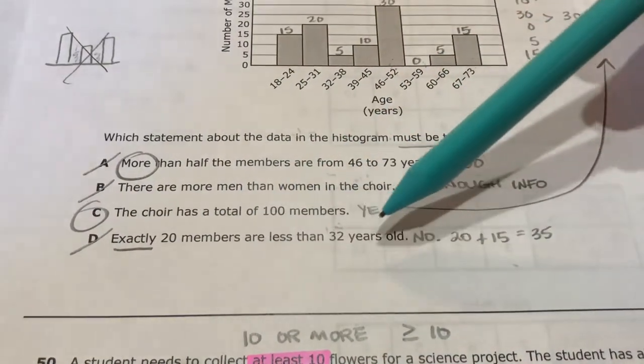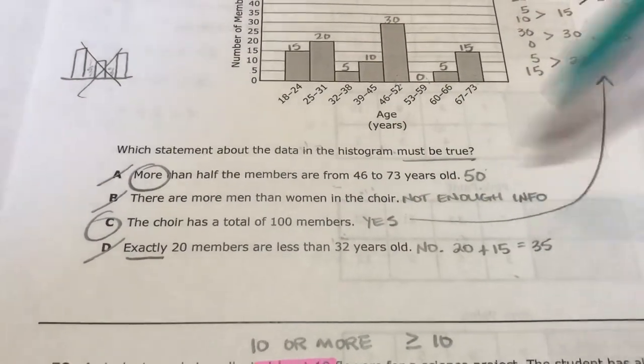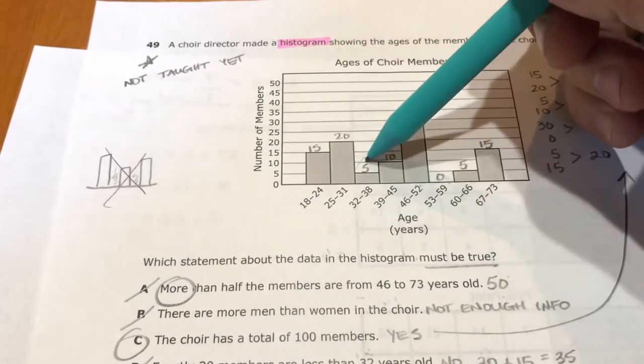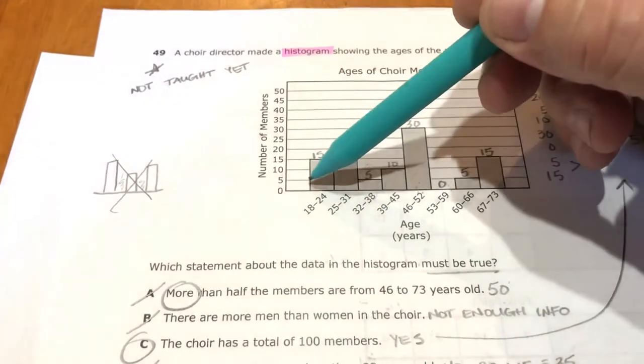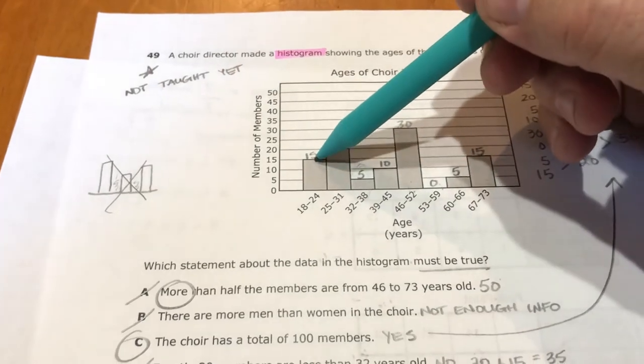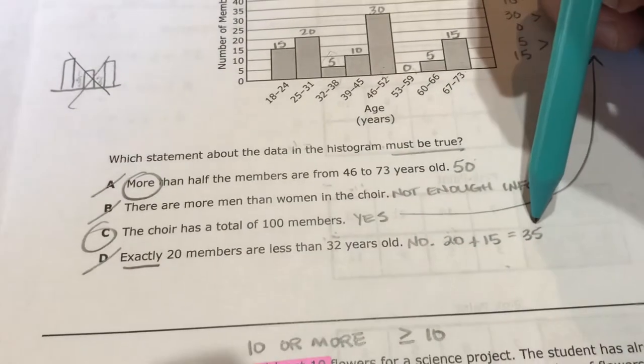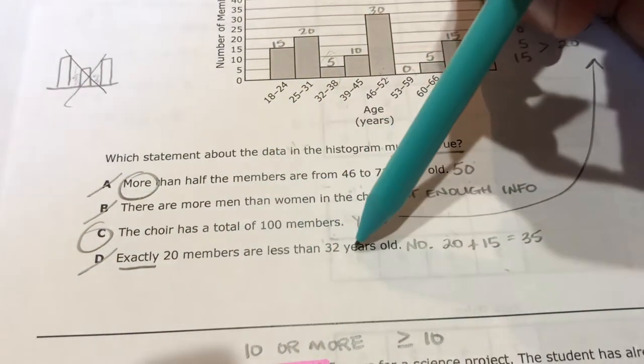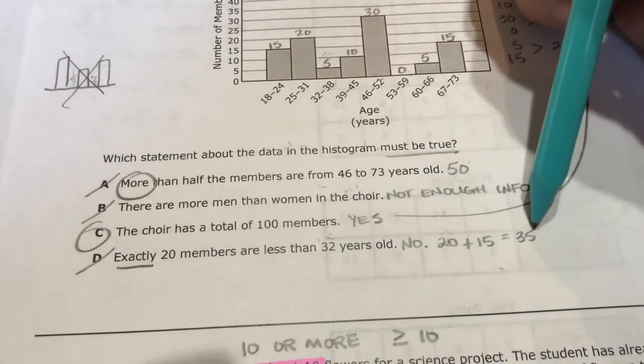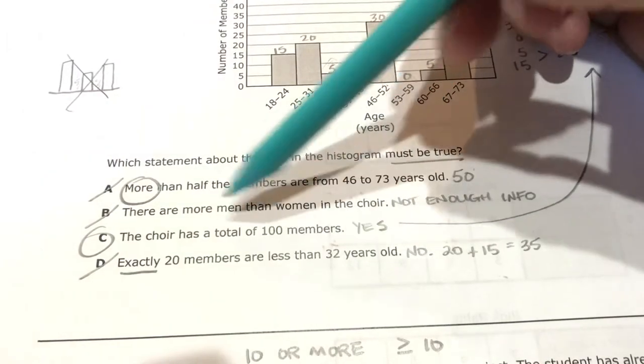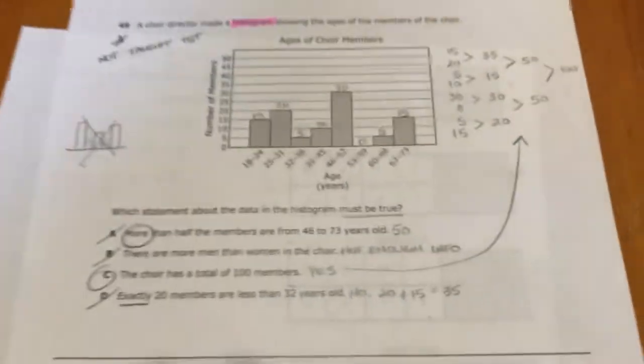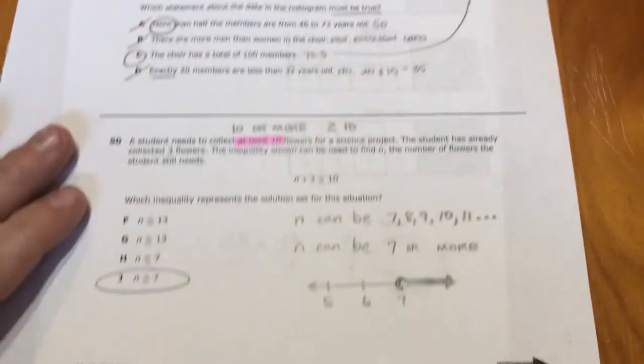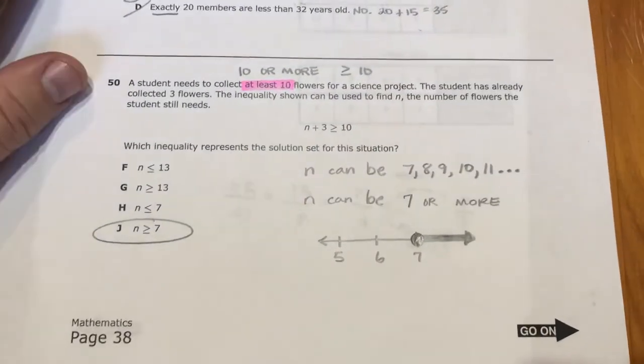So we could cross that out. So that's how you use a histogram to answer some questions. Not too difficult. All right, inequality question here.